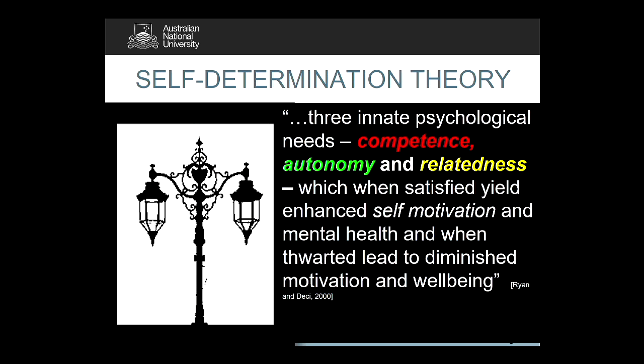Self-determination theory was elucidated by Ryan and Deci — every time I say Deci I'm not sure if it's Deci or Desi — and is a theory of motivation based on a person's basic psychological needs. In a 2000 article, and they've since released a beautiful book which covers all areas of the theory, this article sums up some of the most accessible parts. Human beings can be proactive and engaged, or alternatively passive and alienated.